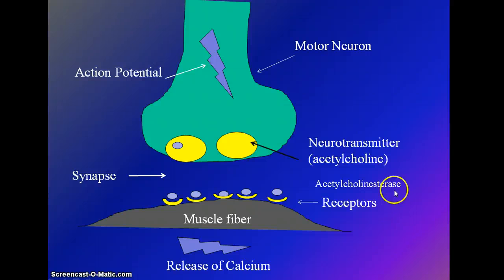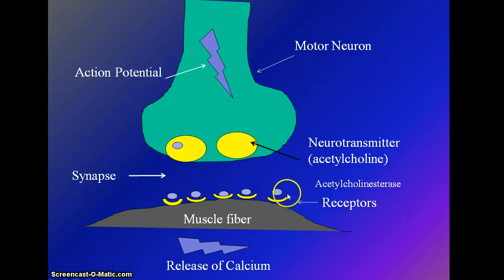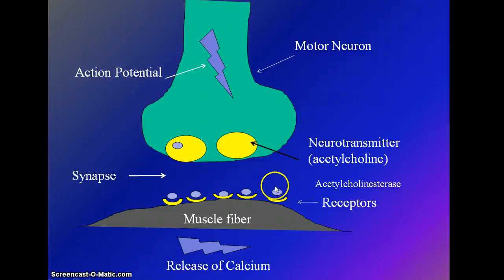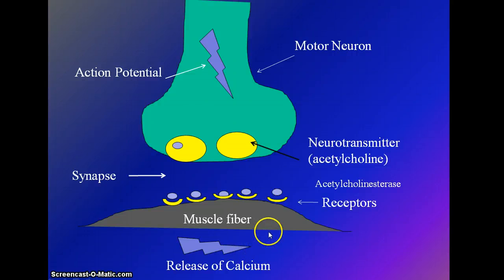You can recognize an enzyme because it ends in -ase. What the acetylcholine esterase will do is break down the acetylcholine molecule. So the acetylcholine goes across the synapse; if enough bind, it induces an action potential and muscle contraction in the fiber. Then acetylcholine esterase breaks the acetylcholine down, and the stimulation will stop.